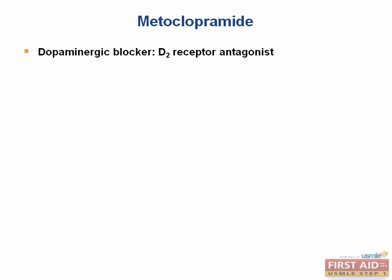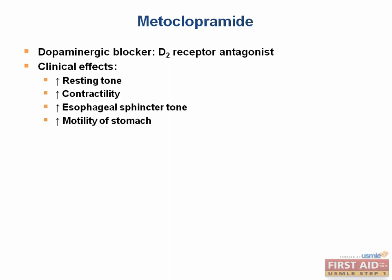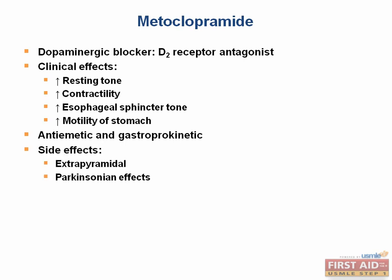Metoclopramide is a D2 receptor antagonist, which works to increase the resting tone, contractility, lower esophageal sphincter tone, and motility of the stomach. It belongs to a family of drugs known as prokinetics. It does not influence the colon transport time. Metoclopramide is useful in diabetic and post-surgery gastroparesis. Since it blocks D2 receptors, just like the typical antipsychotics, it has many of the same extrapyramidal side effects as the typicals, which you will hear about more in the psychiatry lectures.